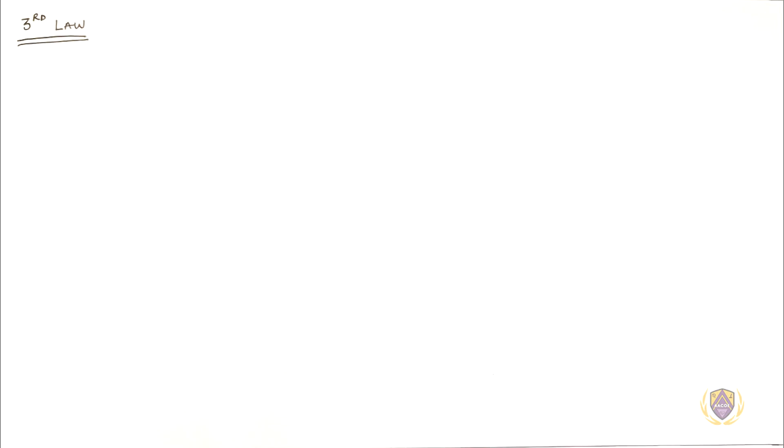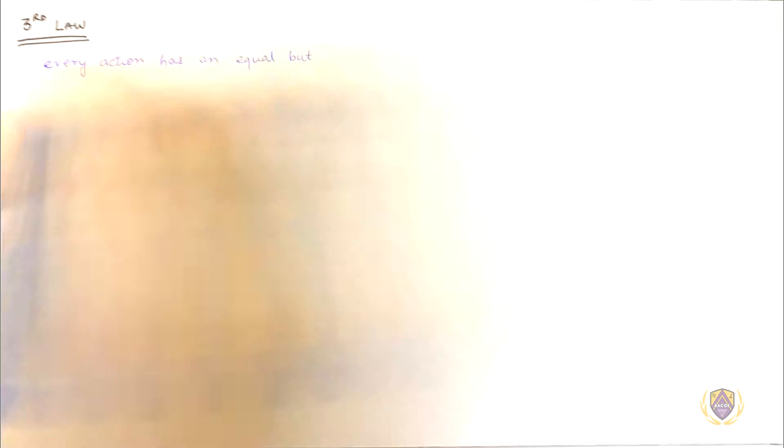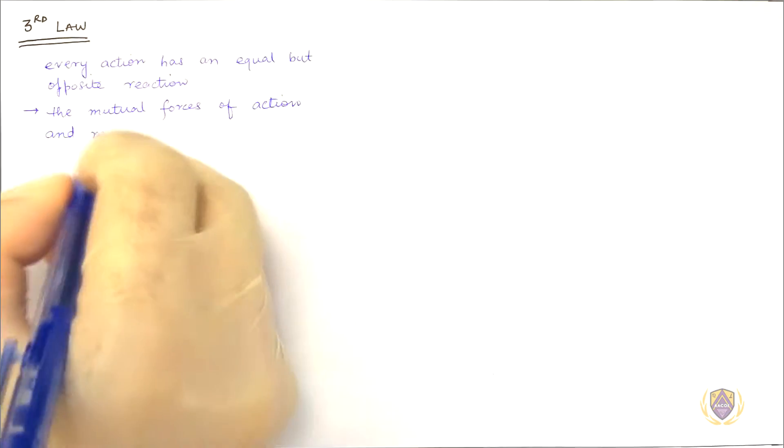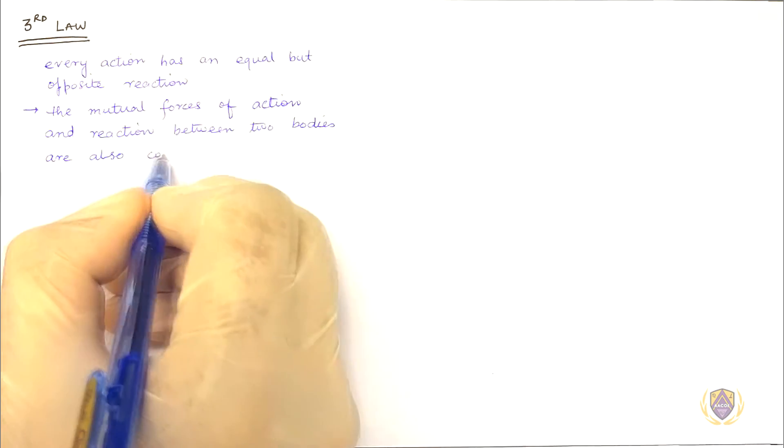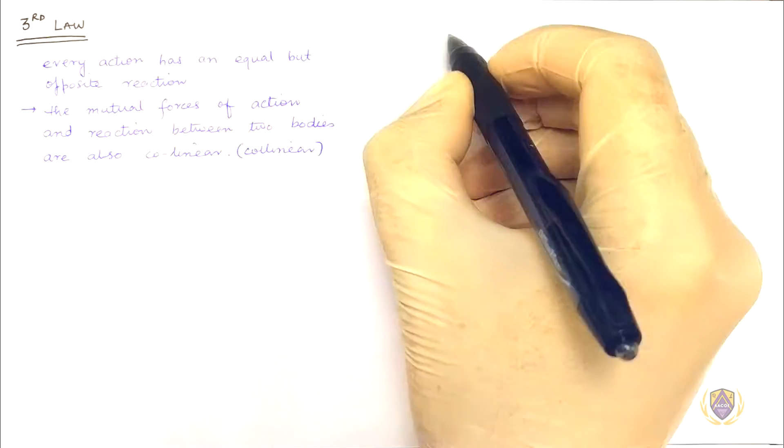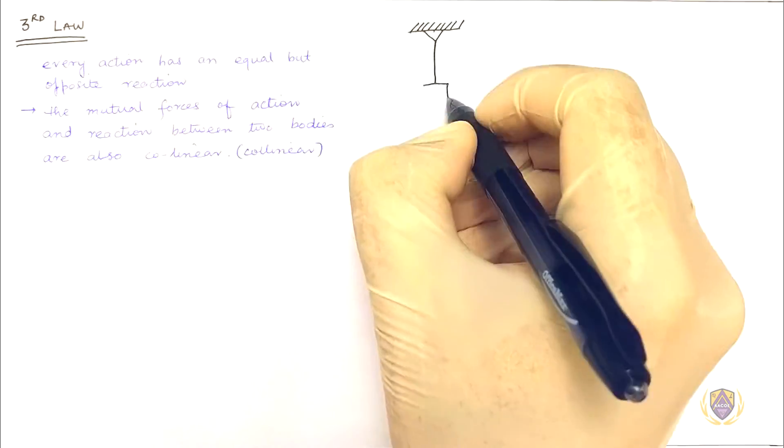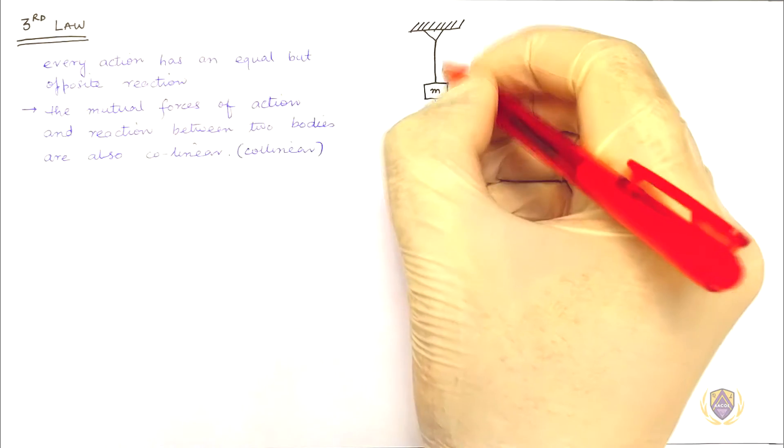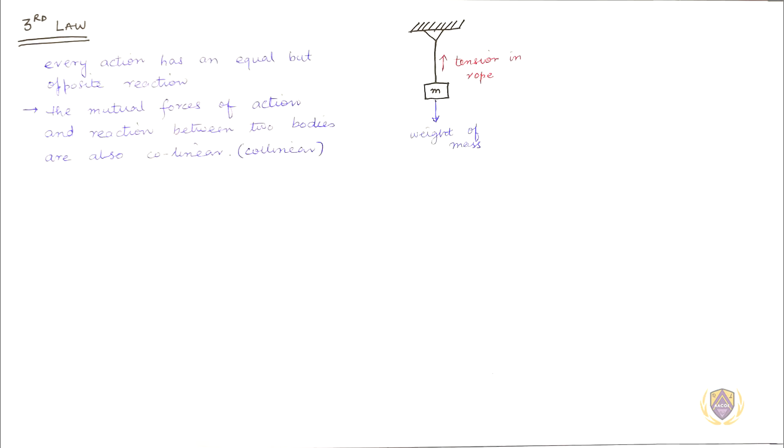Third Law: Every action has an equal but opposite reaction, or in other words, the mutual forces of action and reaction between two bodies are collinear. A body of certain mass will generate tension in the rope it is suspended by. The magnitude of this tension will be equal, opposite, and collinear with the weight of that body.